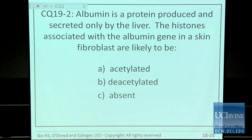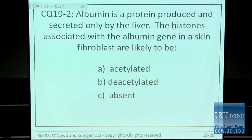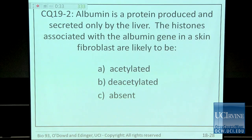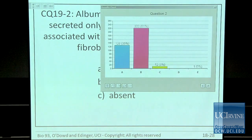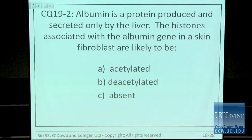Clicker question: albumin is a protein produced and secreted only by the liver. The histones associated with the albumin gene in a skin fibroblast are likely to be A) acetylated, B) deacetylated, or C) absent. The answer is B, deacetylated. Remember: when histones are acetylated, the chromatin is open. When they're deacetylated, transcription is repressed — the chromatin is closed. Answer C, 'absent,' is not a throwaway option.